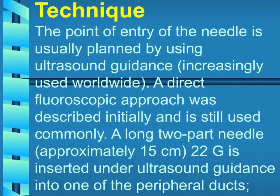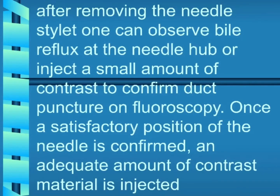Technique: The point of entry of the needle is usually planned using ultrasound guidance, which is increasingly used worldwide. A direct fluoroscopic approach was described initially and is still used commonly. A long two-part needle, approximately 15 centimeters, 22 gauge, is inserted under ultrasound guidance into one of the peripheral ducts. After removing the needle stylet, one can observe reflux at the needle hub or inject a small amount of contrast to confirm duct puncture on fluoroscopy.